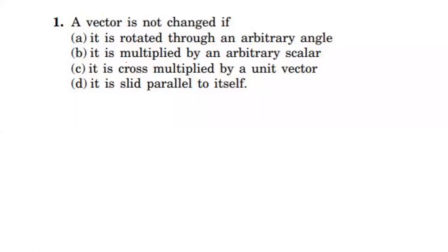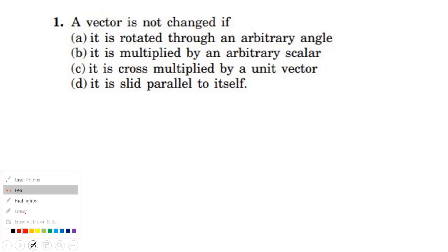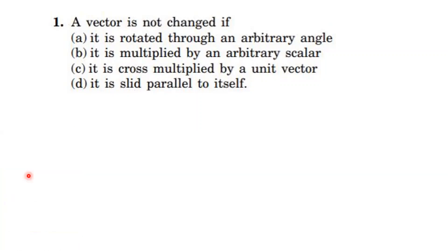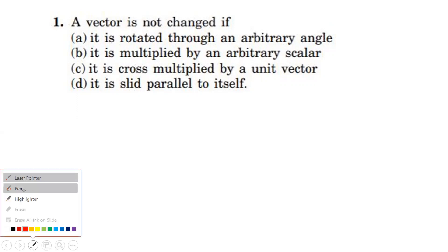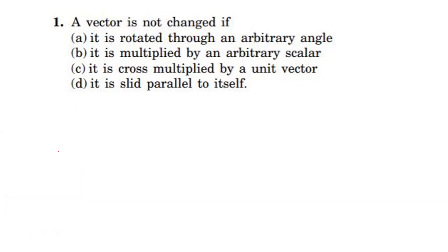Let us discuss concepts of physics textbook objective questions. First question: a vector is not changed if... Generally, a vector can be represented by both magnitude and direction. If either magnitude changes, or direction changes, or both change, then the vector is said to change.